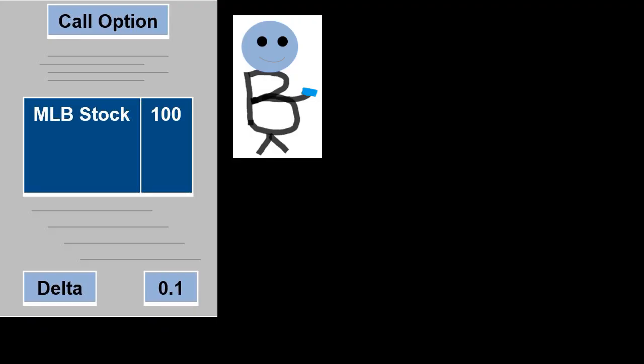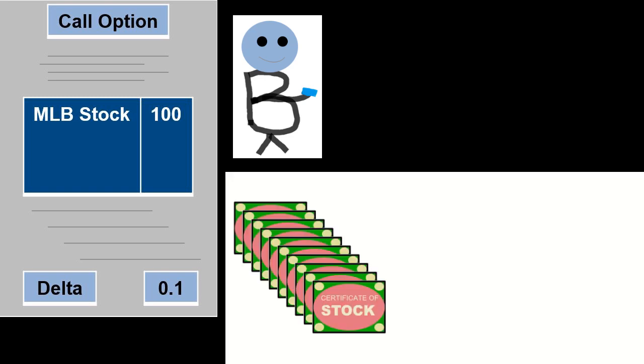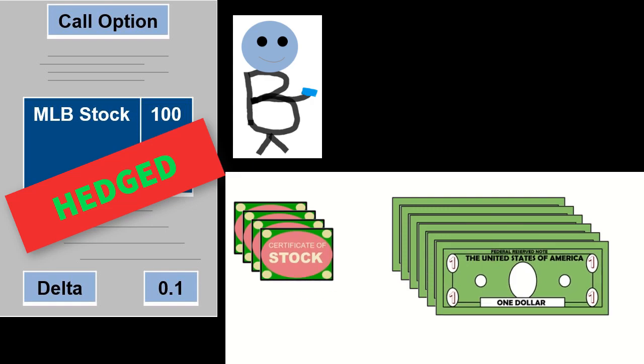Therefore, if the call option is for 100 shares of MLB stock and delta is 0.1, the trader needs to short 10 shares of MLB.